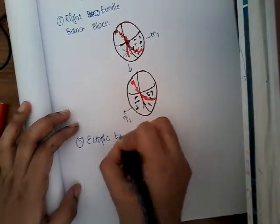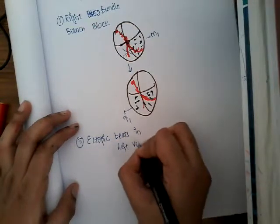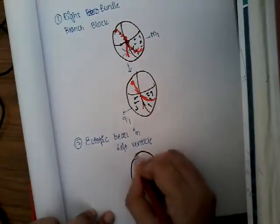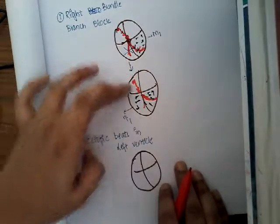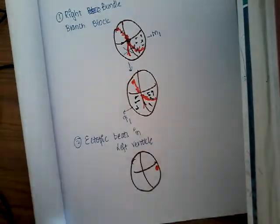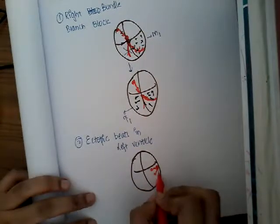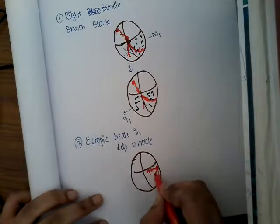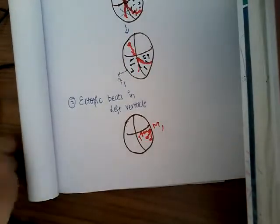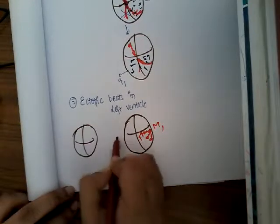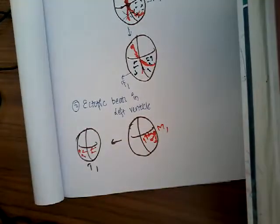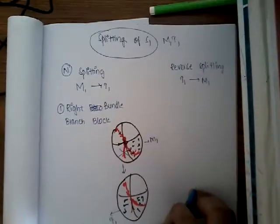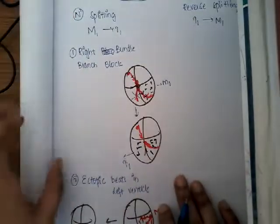Another cause of normal splitting is ectopic beats in the left ventricle. When there is an area in the left ventricle acting as a pacemaker, it contracts the left ventricle first producing M1, and then impulses transmit to the right ventricle producing T1. So again M1 is followed by T1. These are the two causes of normal splitting of S1.